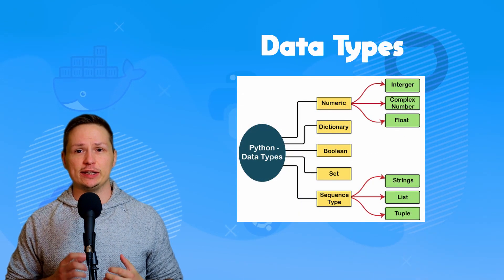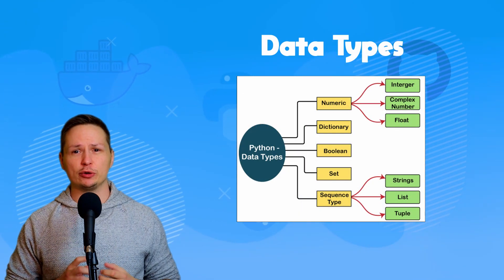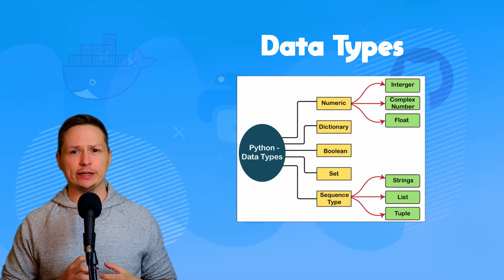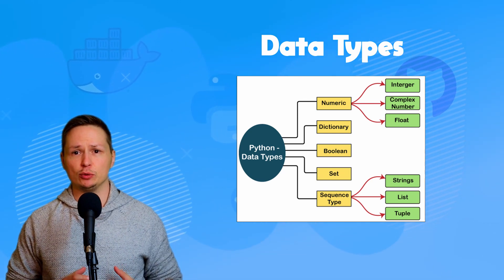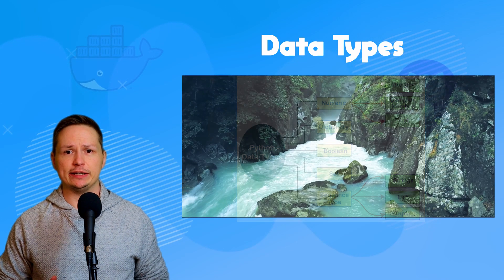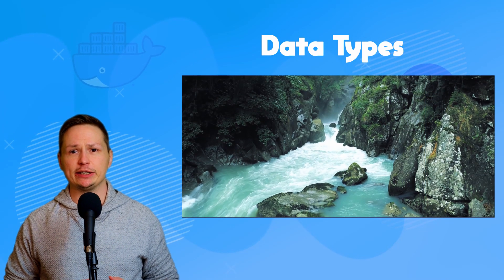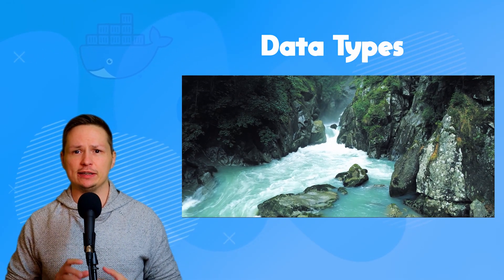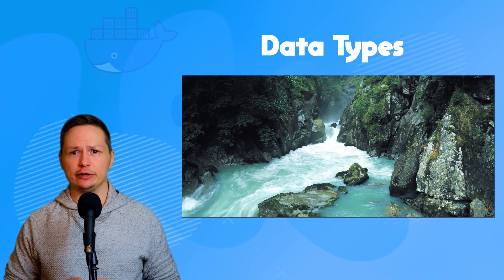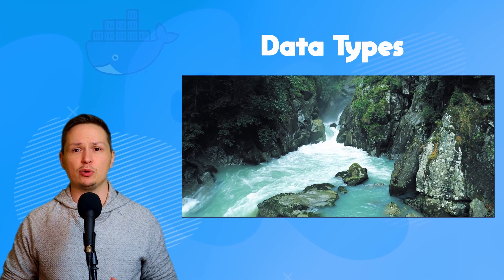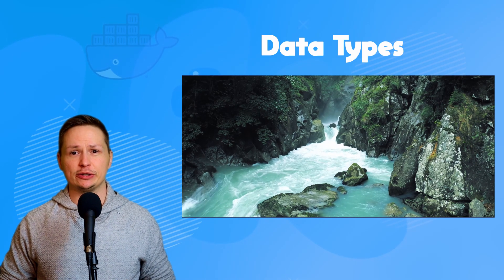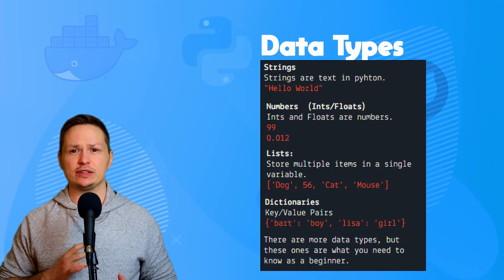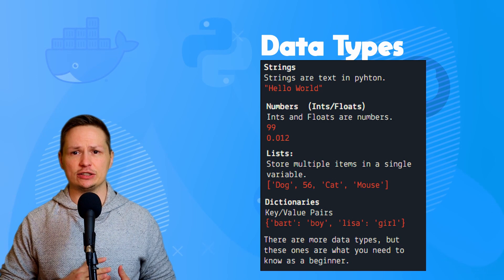Data types are arguably the most important thing you need to understand when it comes to Python. Applications are really just a flow of data, and being able to capture and store data into the proper data types is half the battle. The four most important data types you need to understand are strings, integers, lists, and dictionaries.